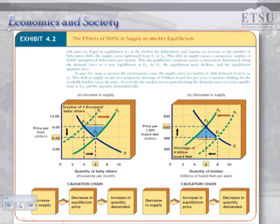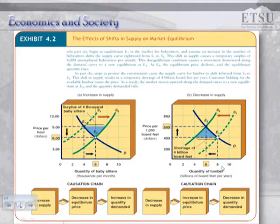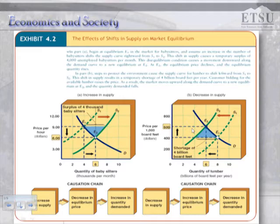Conversely, a decrease in supply, shown in panel B on the right, is a leftward shift of the supply curve from S1 to S2. The decrease in supply results in a higher equilibrium price, and the higher price results in a decrease in quantity demanded. Therefore, the new equilibrium has a higher price and a lower quantity exchanged in the market. For example, when the price of a barrel of oil increases, the supply of gasoline shifts left and the price of gasoline rises — this is why changes in oil prices directly affect what many of us pay for gasoline.